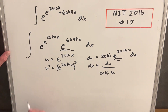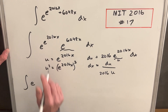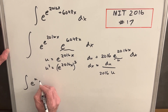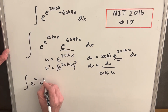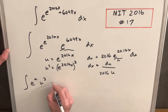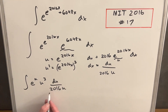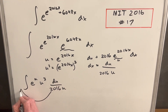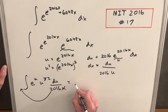Now we're set up for our substitution. The first piece is going to be e to the u, then this is u-cubed, and our dx is going to be du over 2016u. I'm going to pull the 2016 out front and cancel a u, so let's see what we have left — now we have this thing simplified.